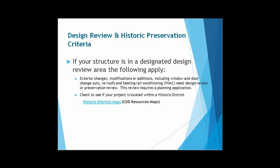If your project does happen to fall within a designated design review area and the work consists of any exterior changes, modifications, or additions, including window and door changeouts, any re-roofs, or work on the heating and air conditioning systems, a design review or preservation review would be required. Depending on the extent of the work, in some cases a planning application would be required. Otherwise, if it's minor in nature, there are planning exemption forms that could be completed at the counter and you could proceed to the building department.